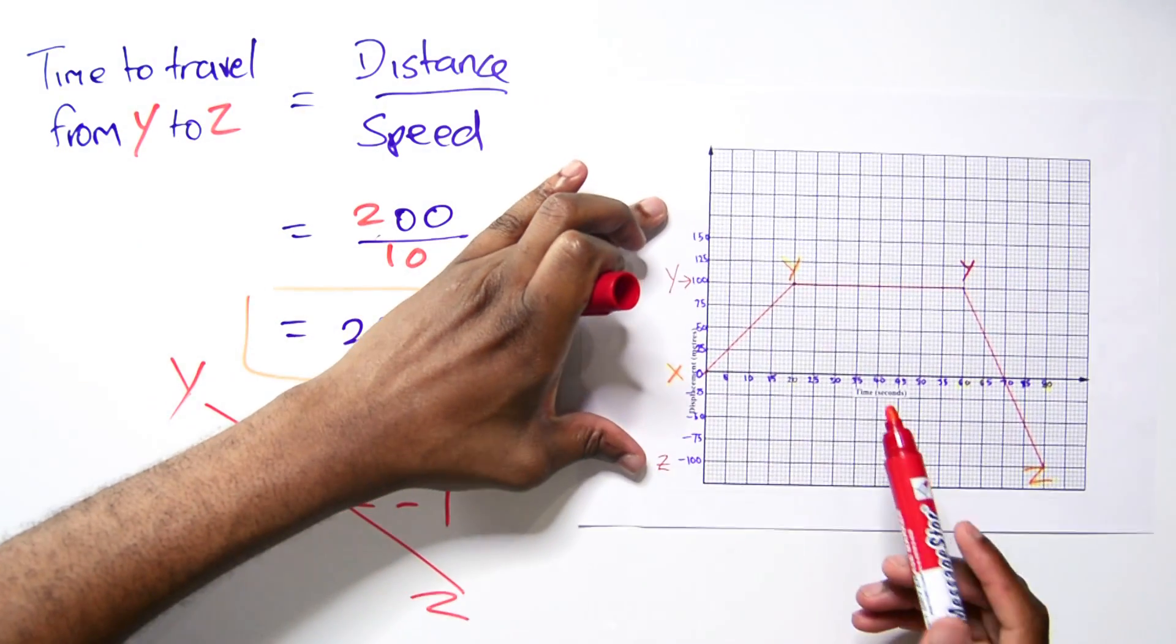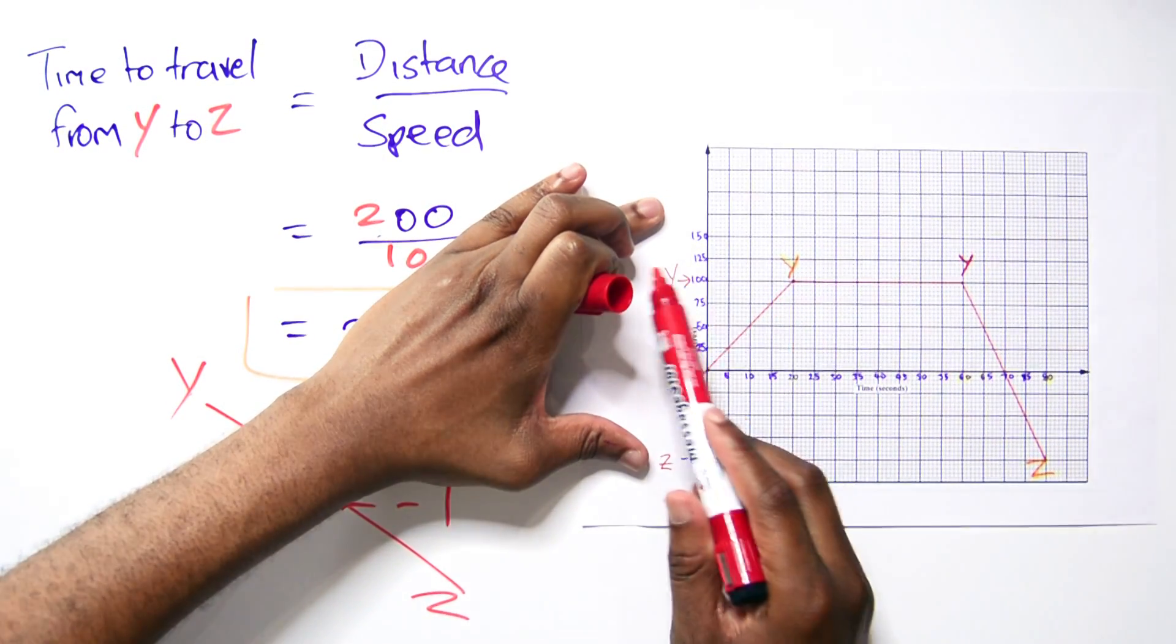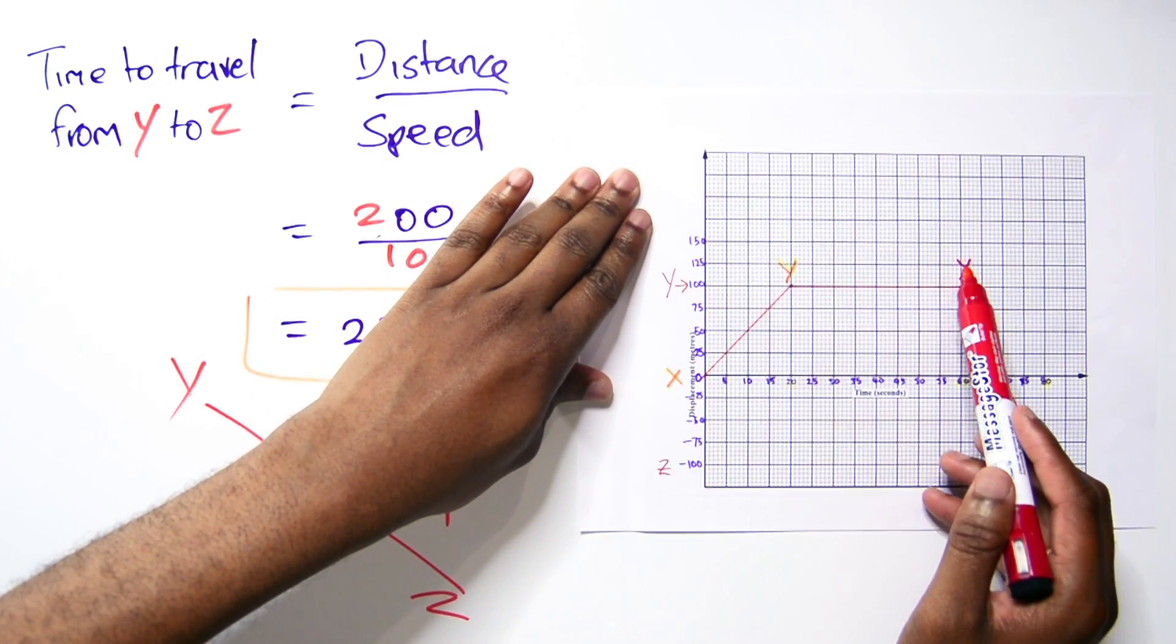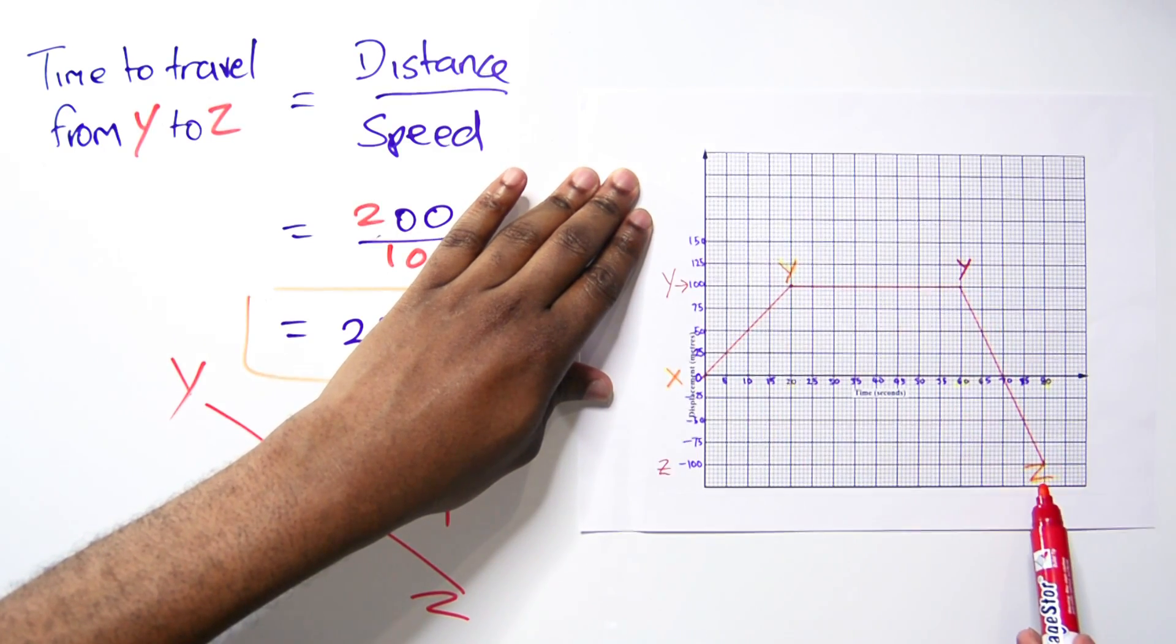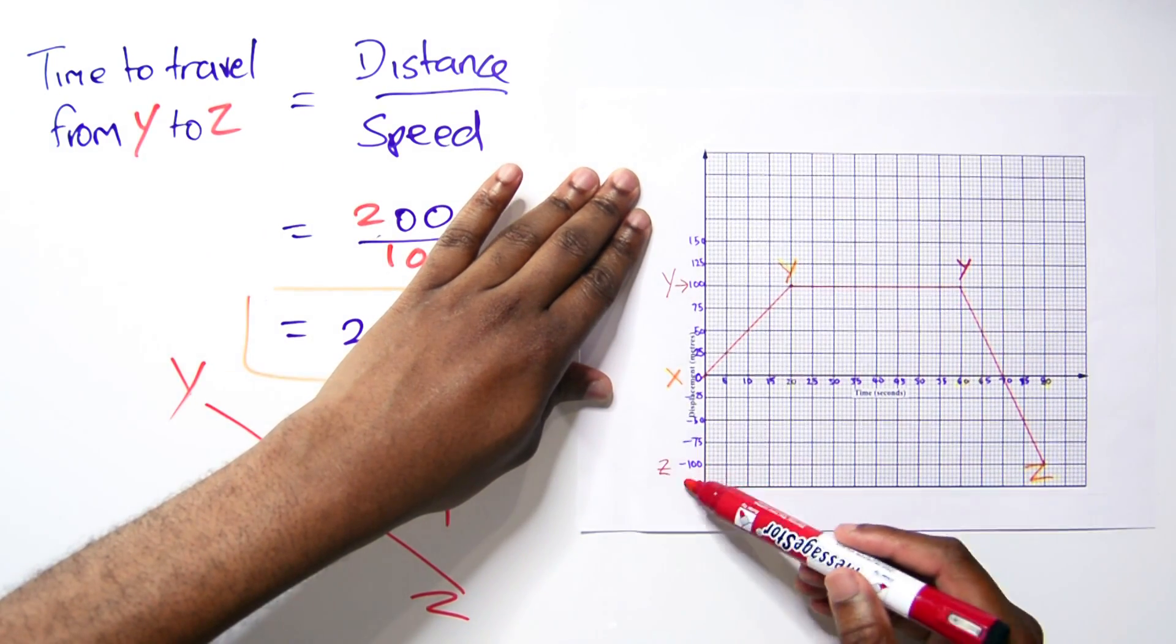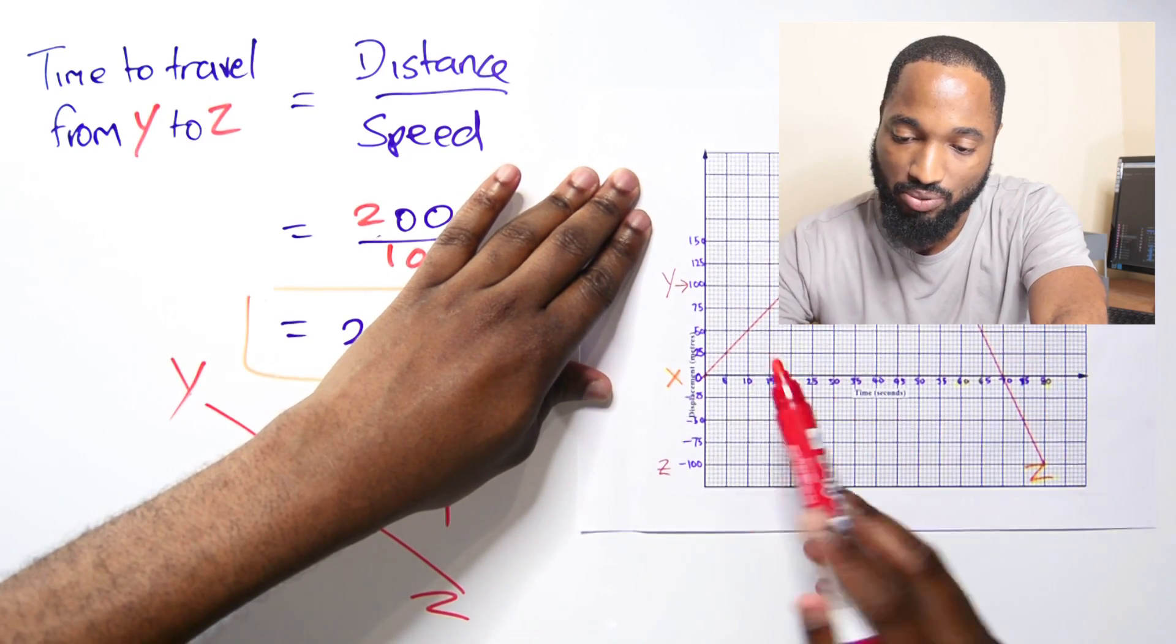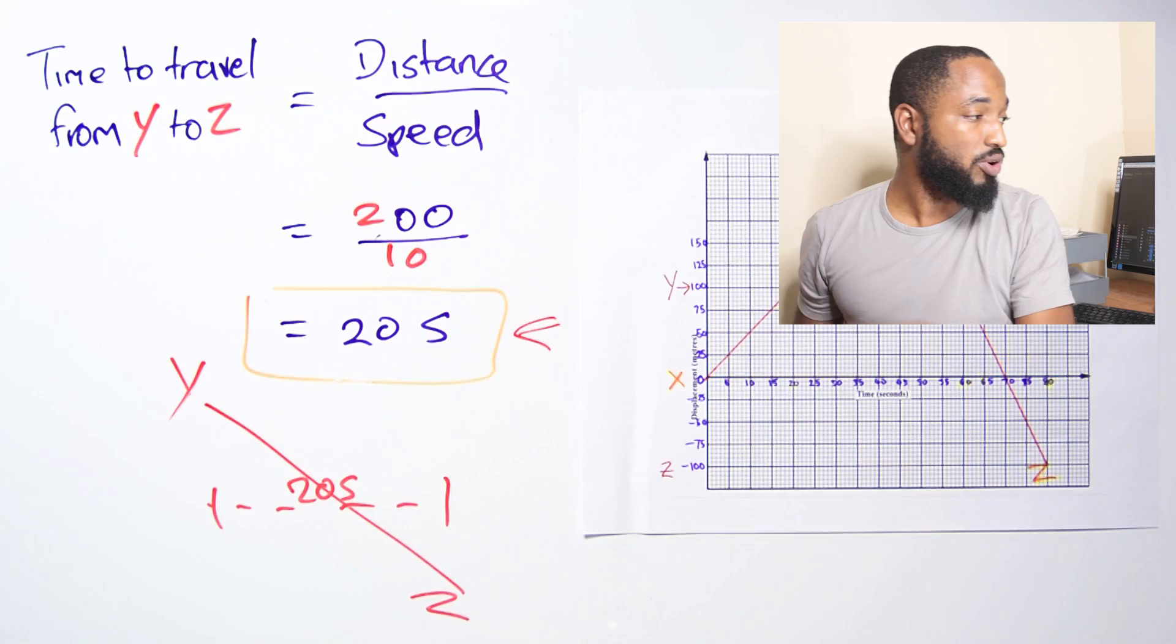Now we know all the times that correspond to different segments of the graph. From X to Y took 20 seconds, we stayed at Y for 40 seconds, then we dropped to Z, which only took 20 seconds. But Z dropped 200 meters, which pushed us into the negative side because we're going south when we went up north.